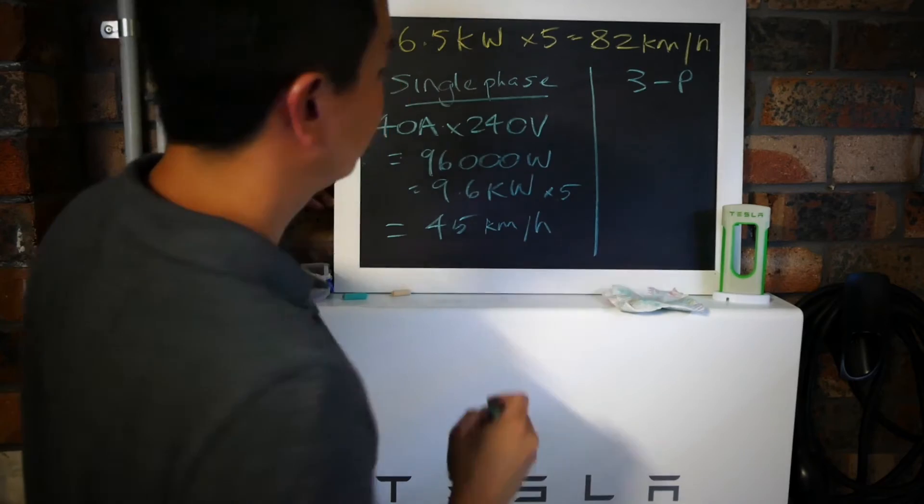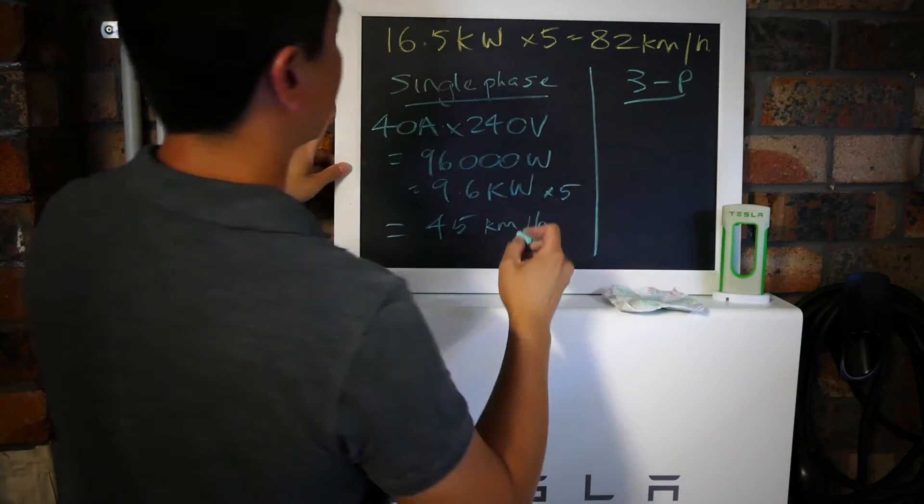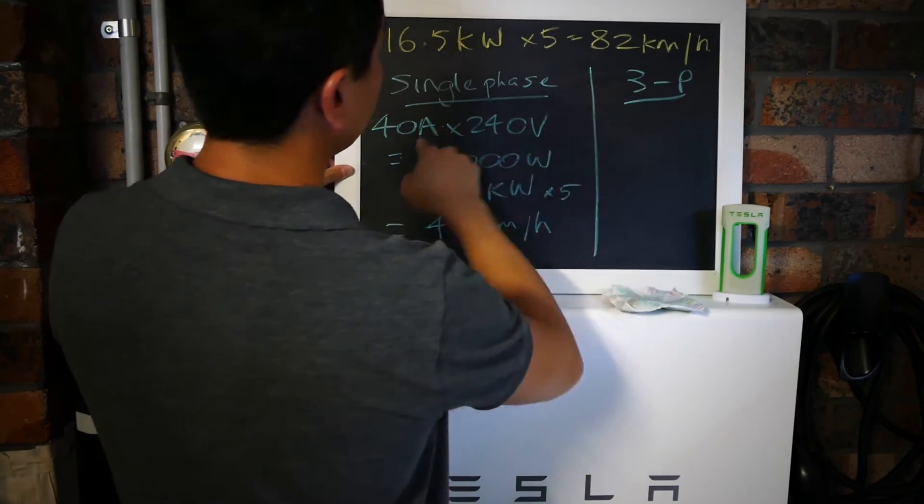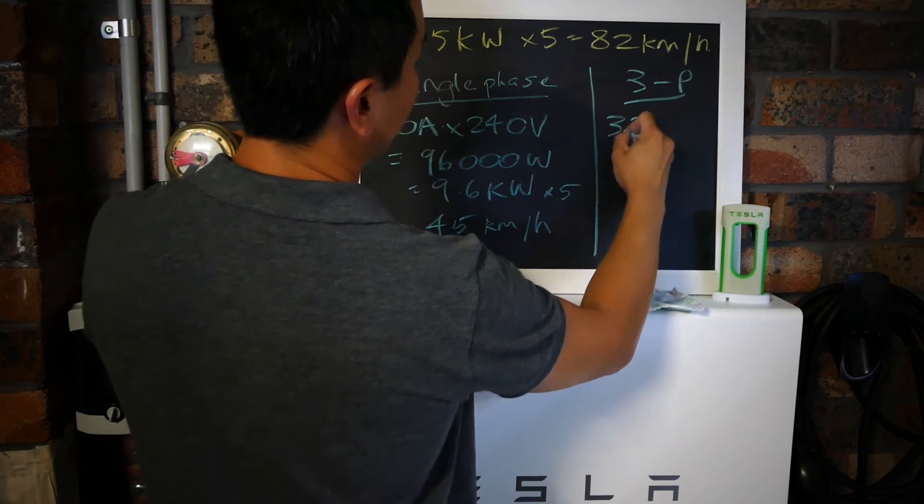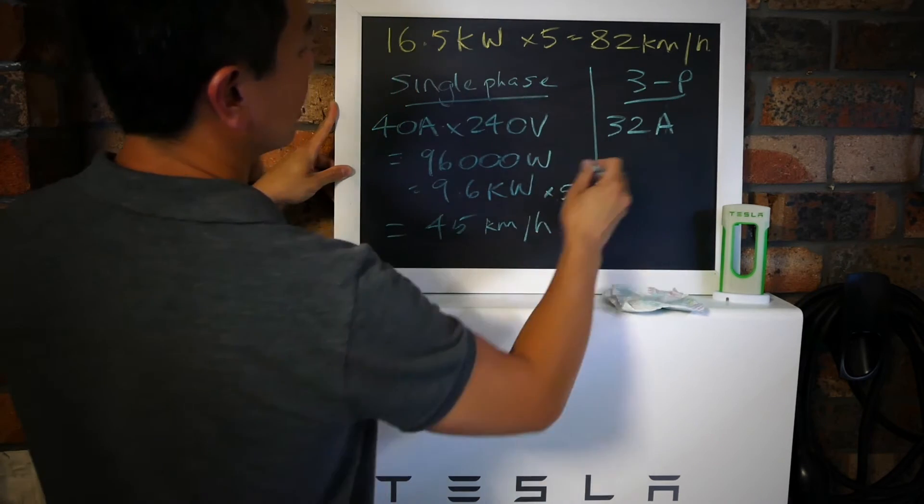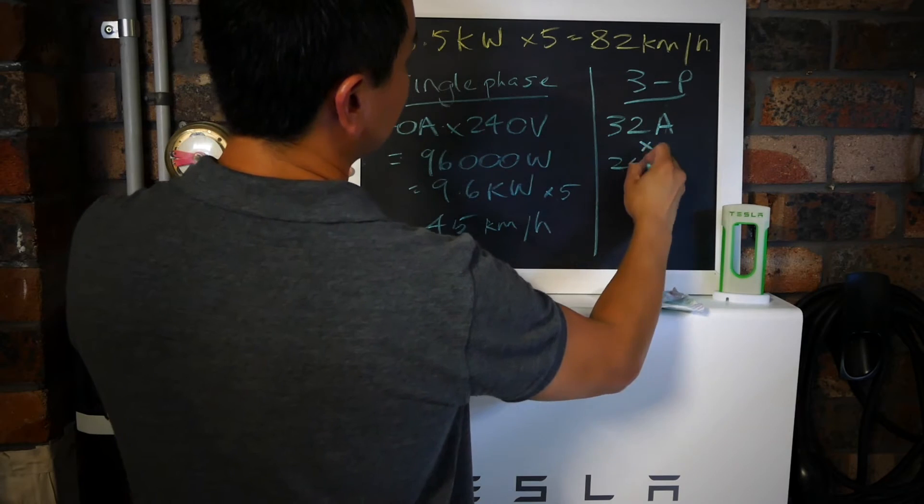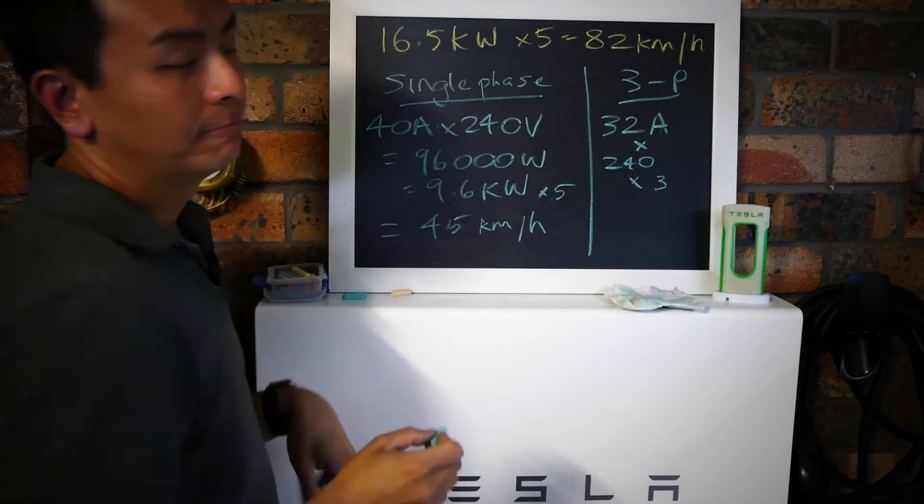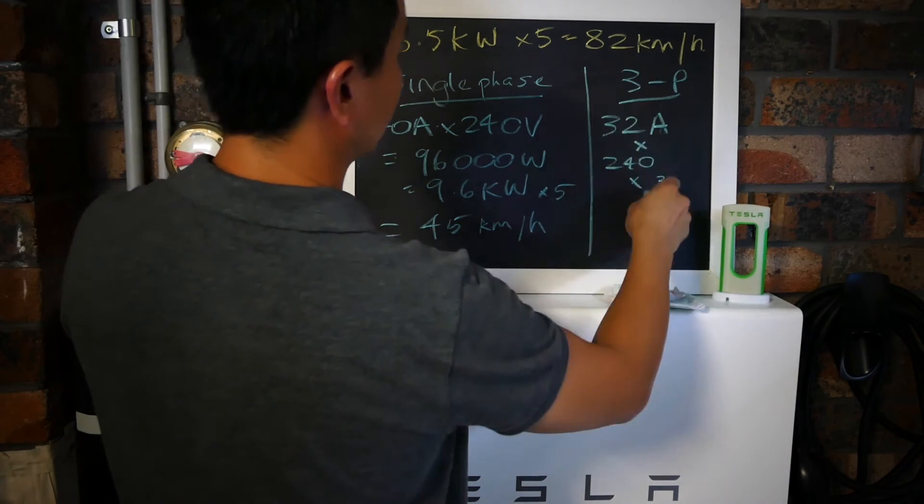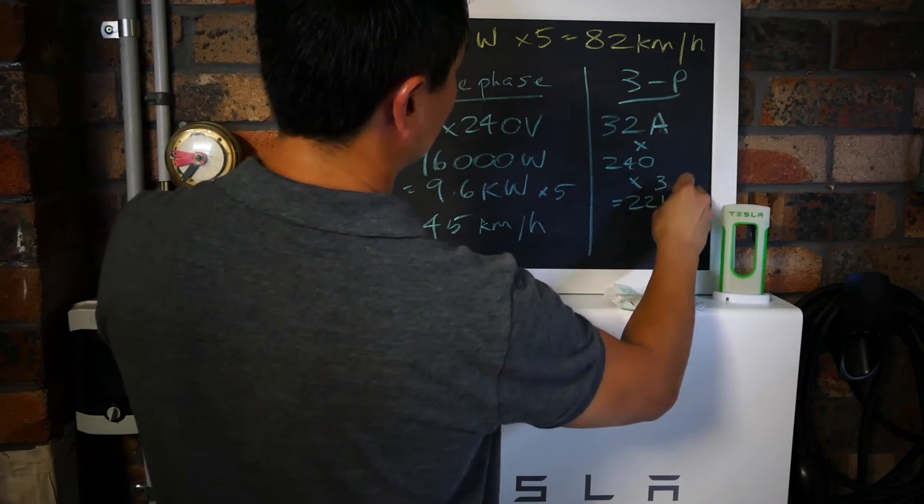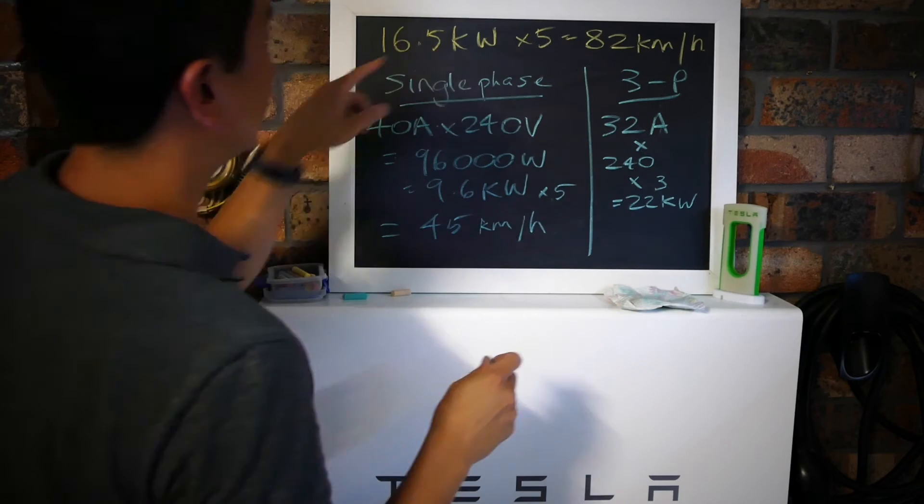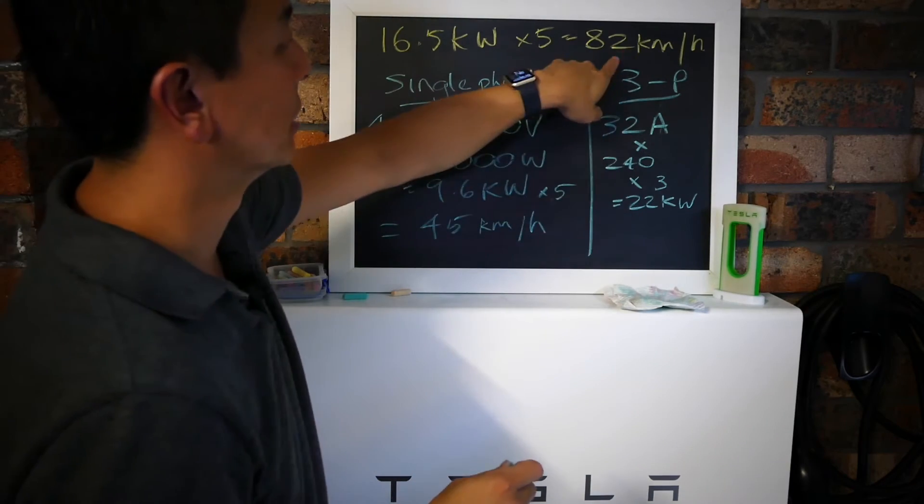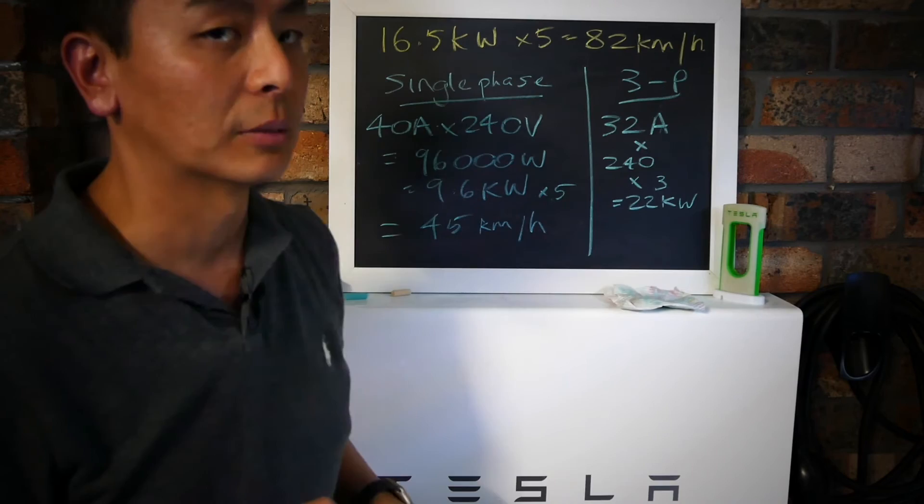If you have a three phase charger, the benefit is that even though the current is smaller - they're only rated at 32 amps - because there's three phases, you can multiply this by three. You will definitely reach that because this is already 22 kilowatts.